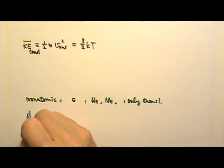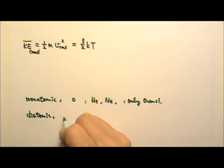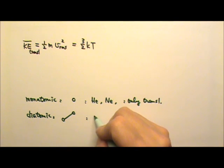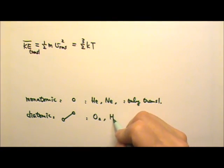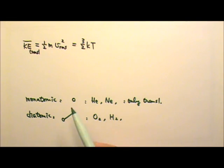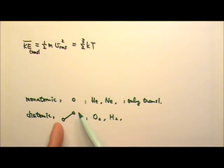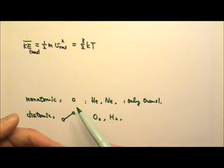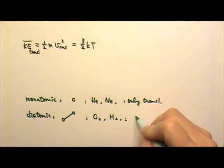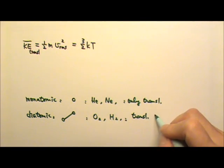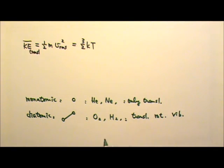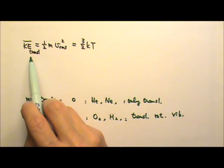But if you have a diatomic ideal gas — a diatomic gas has two atoms in one molecule, examples are oxygen, hydrogen, etc. — because you have two atoms, not only can they move around and have translational kinetic energy, they can also vibrate and give vibrational kinetic energy, or rotate and give rotational kinetic energy. So they would have translational, rotational, and vibrational kinetic energy — it's more complicated. For this course, you just need to know the translational kinetic energy.